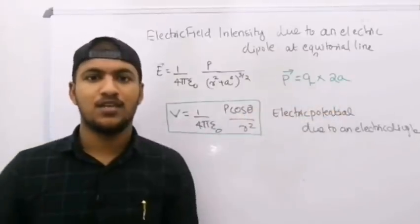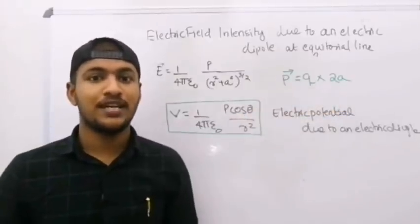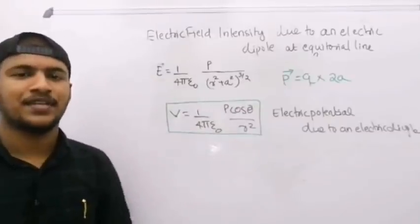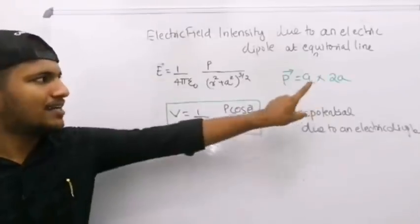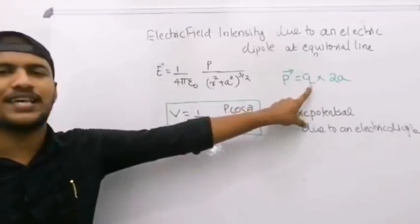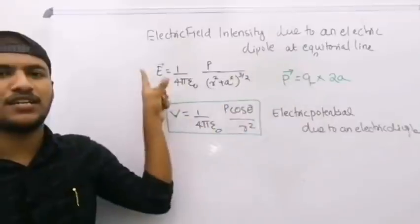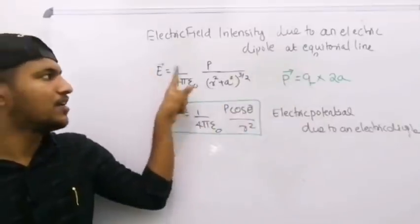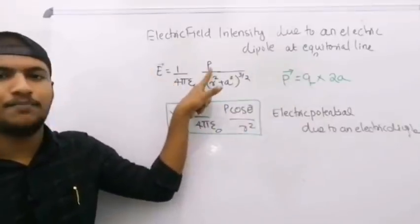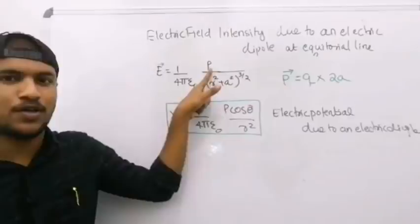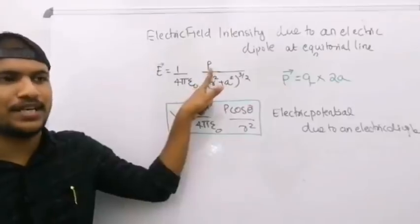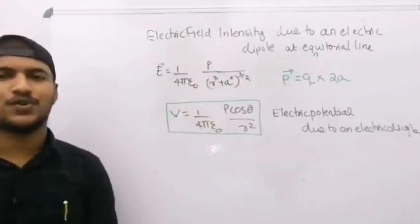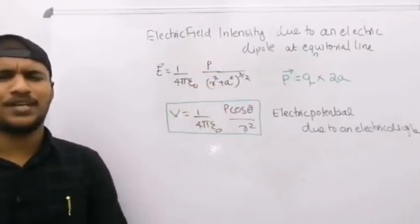What is Q into 2a? Q into 2a — Q in the name of charge. Charge is a scalar quantity. The electric field is a vector quantity. Dipole moment is a vector quantity. The electric potential is a scalar quantity.